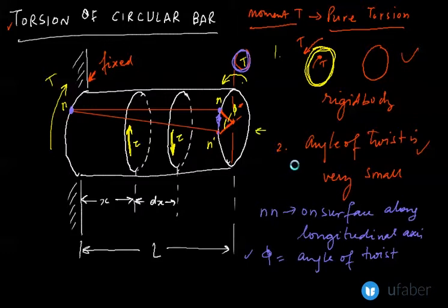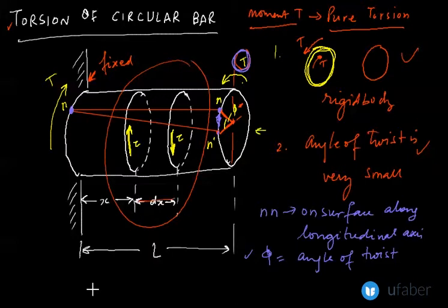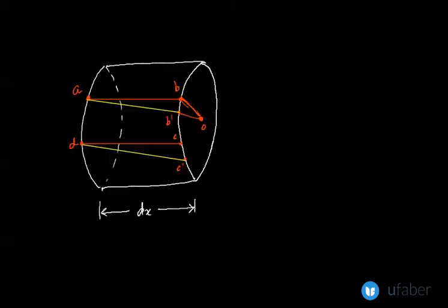If I go back to the previous diagram, this diagram has an element of length DX, and this element is now illustrated in this diagram. This is again a small element of length DX. Now look at this element, element ABCD.